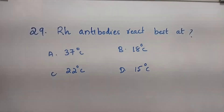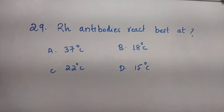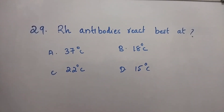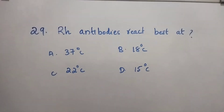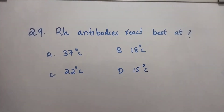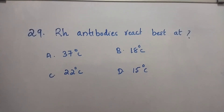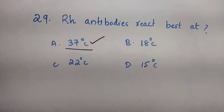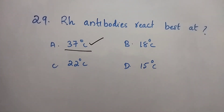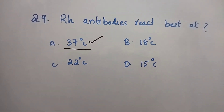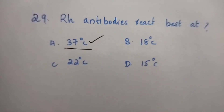Question number 29: Rh antibodies react best at — Option A: 37°C. Option B: 18°C. Option C: 22°C. Option D: 15°C. The right answer is Option A, 37°C. Rh antibodies react best at 37 degrees Celsius.